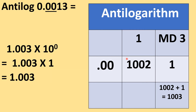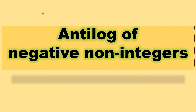Now anti-log of 0.0013. In the row of 0.00 under column 1 in the anti-log tables, the number is 1002. Under mean difference column 3, the number is 1; add 1 to 1002 to get 1003. Write 1003 as 1.003 into 10 raised to the power 0, since 0 is the characteristic. That gives 1.003 times 1, which is simply 1.003. Thus anti-log of 0.0013 is 1.003. Now we shall learn anti-log of negative non-integers.